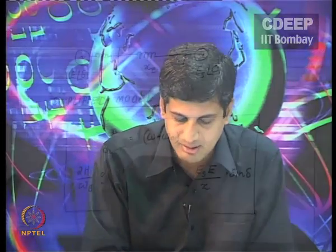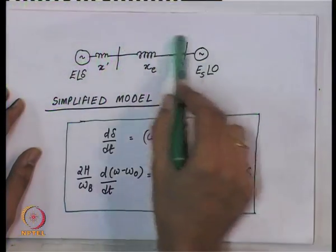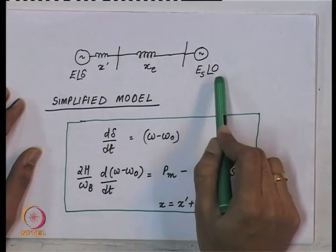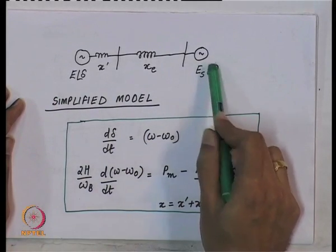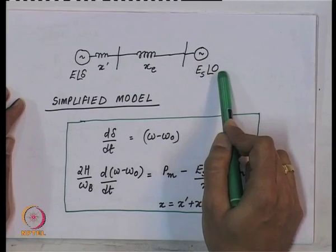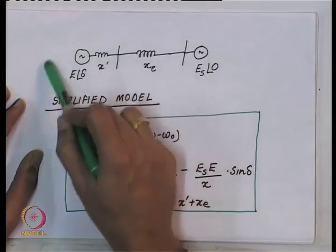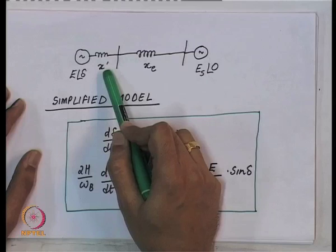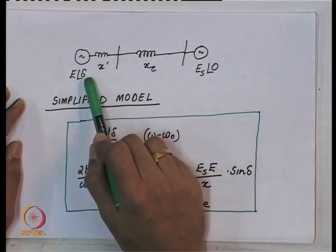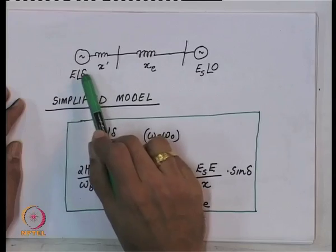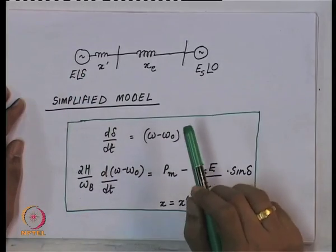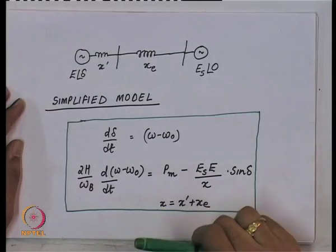We considered a toy model of a power system last time. Let us quickly recap. We had a single machine connected to a voltage source — a stiff voltage source we call an infinite bus. The synchronous machine was modeled as a voltage source behind a transient reactance, and the phase angle of the voltage source was delta, which is related to the position of the rotating machine.